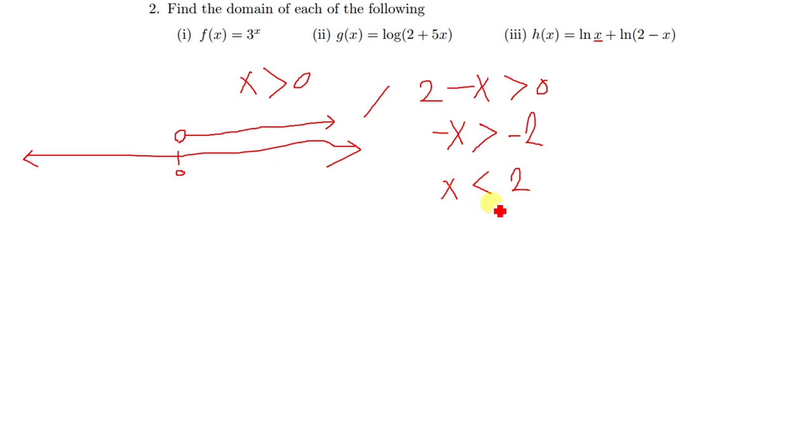And then we have x less than 2, so if this is 2 there, have x less than 2. So x less than 2 are just numbers going this other side. So from there you just get the intersection. So the intersection is just this part.